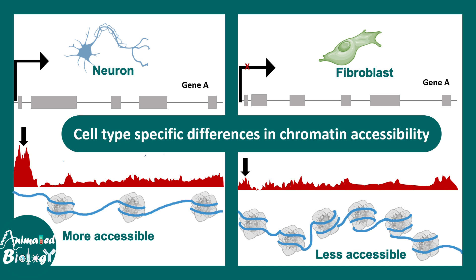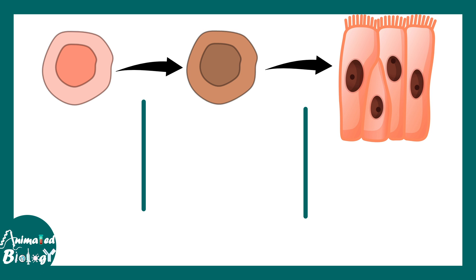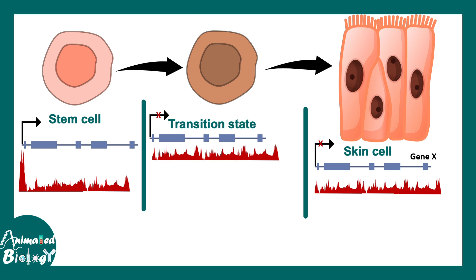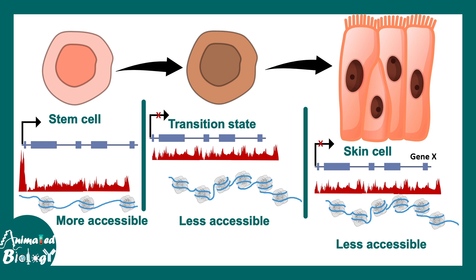Not only different cell types — imagine a cell type that is differentiating. A stem cell differentiates into a skin cell via a transition state. There may be a determinant gene of the stem cell, gene X, that has to shut off in differentiated lineages. Gene X is activated in the stem cell and inactivated in the other cells because accessibility across this chromatin differs. The ATAC-seq peak shows high accessibility around the promoter of gene X in the stem cell, while accessibility is low across the promoter in the two differentiated cell types, explaining reduced transcription there.